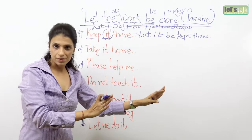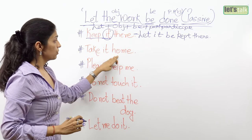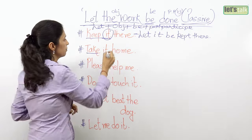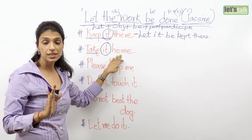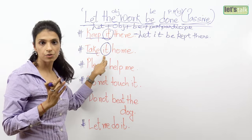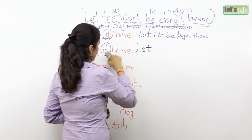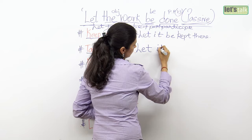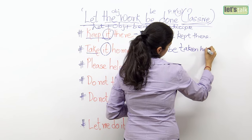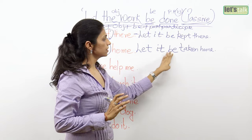Sometimes you may say 'Let the window be opened' — that is a passive imperative sentence. Let's take the next sentence: 'Take it home.' Do not assume 'home' to be the object and write 'Let home be taken.' No. Ask 'take what?' — the answer is 'take it.' Home is not the object; it is at the end of the sentence, so just place it as it is. The passive is: 'Let it be taken home.' 'It' is the object.